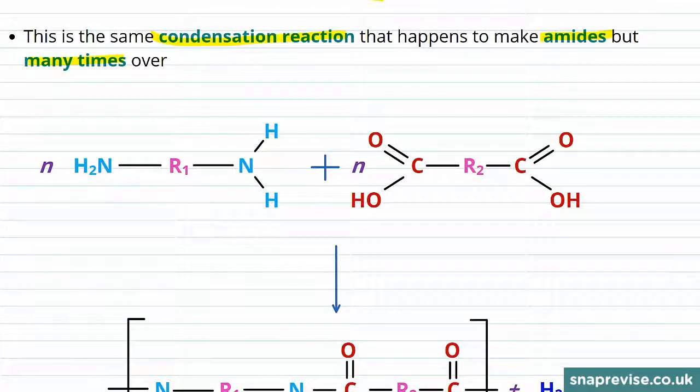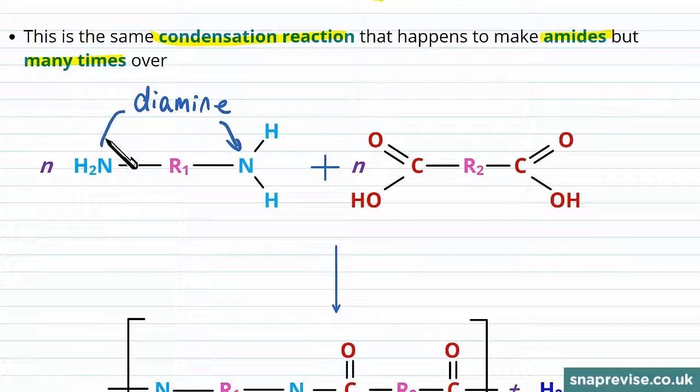We can show this reaction in a similar way to how we showed the previous one, where we have a diamine given here on the left that has amine functional groups at either end, and something generic in the middle which will depend on the particular type of polyamide, and then we react this with a dicarboxylic acid.